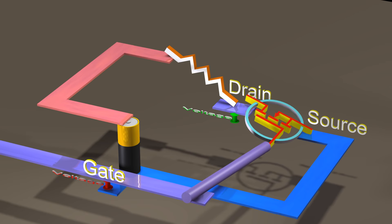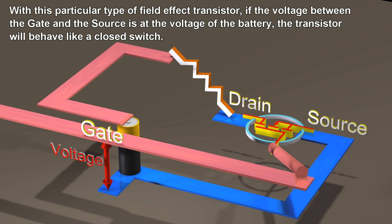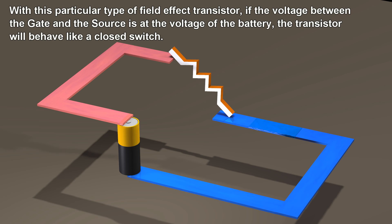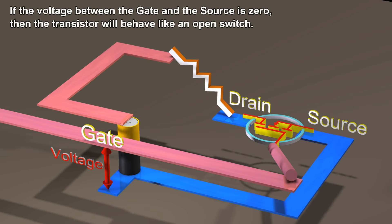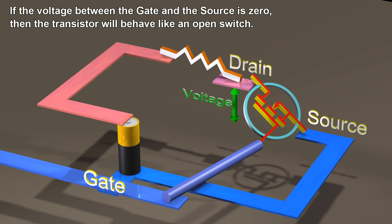With this particular type of field effect transistor, if the voltage between the gate and the source is at the voltage of the battery, the transistor will behave like a closed switch. If the voltage between the gate and the source is zero, then the transistor will behave like an open switch.